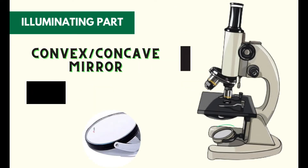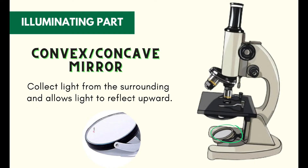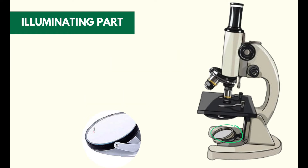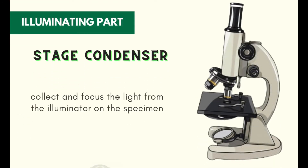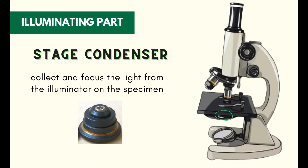Now let's look at the illuminating parts of a microscope. The mirror collects light from the surrounding and allows light to reflect upward. There are two types of mirror: convex and concave. The iris diaphragm regulates the amount of light entering the body tube. The stage condenser collects and focuses the light from the illuminator on the specimen.